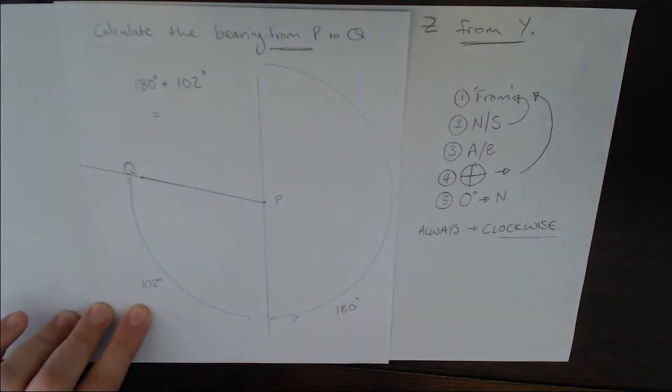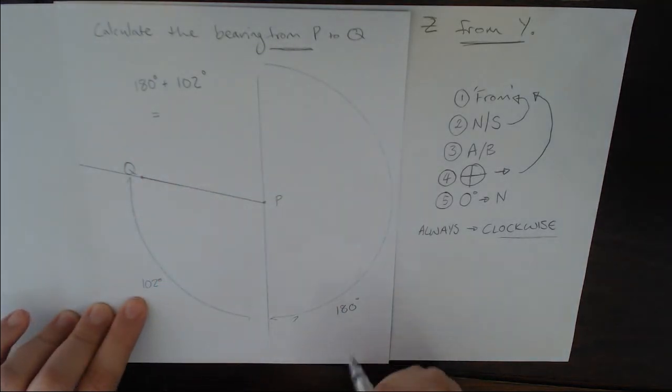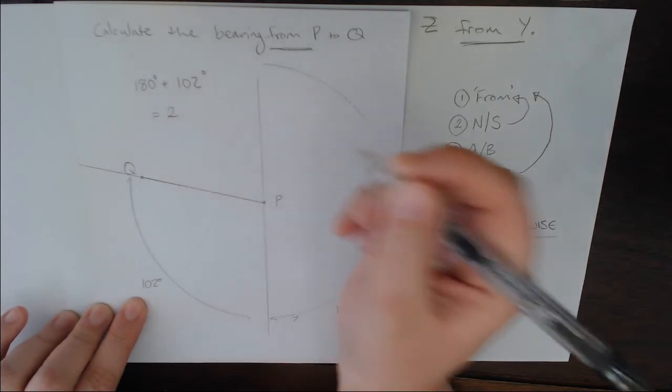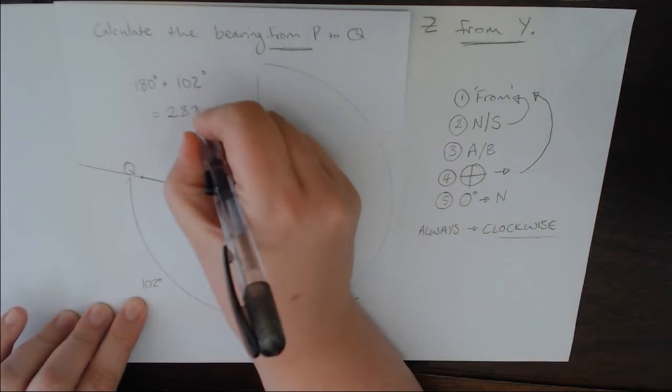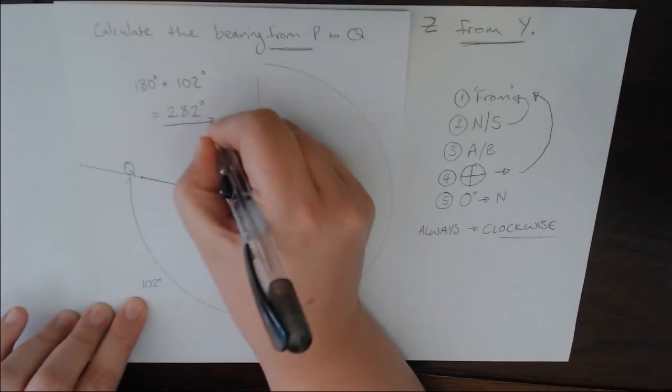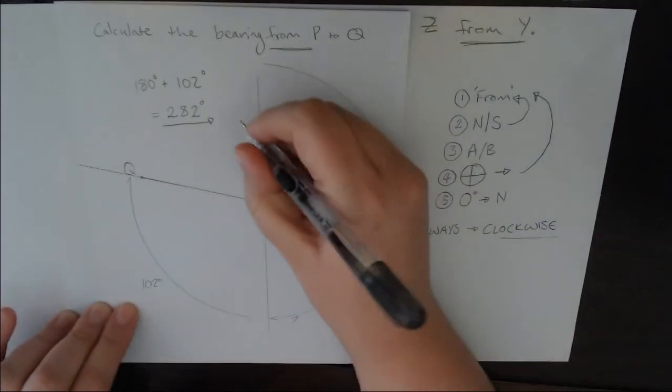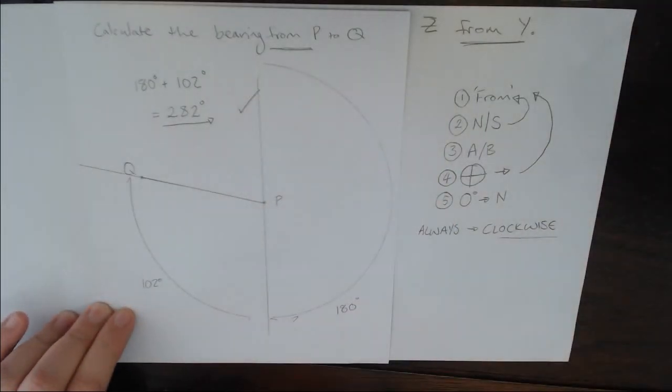That is 282. Please use a calculator for this. The number of times that I've got 182 because of simple little mistakes, don't be a martyr, use a calculator. So that is how you calculate bearing. If you have any questions comment below, like, share, subscribe and I will see you for more mapwork soon.